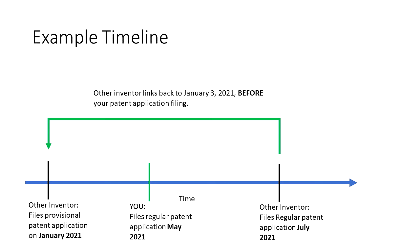While the inventor's regular application of July 2021 can't be directly used to reject your patent application of May 2021, the provisional patent application from January of that year could be used as a basis for a rejection of your application of May 2021, since it predates your application.